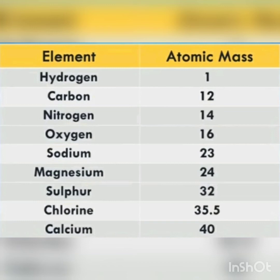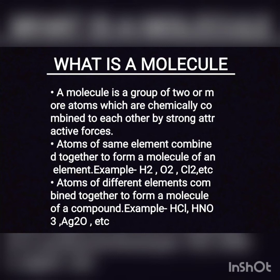As we all know, atoms cannot exist freely — they exist in nature in a combined state. These atoms combine together to form a molecule. A molecule can be defined as a group of two or more atoms which are chemically combined to each other by strong attractive forces. When atoms of the same element combine together, it forms a molecule of an element — for example, H2, O2, Cl2, etc. When atoms of different elements combine together, it forms a molecule of a compound — for example, HCl, Ag2O, HNO3, etc.